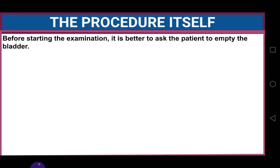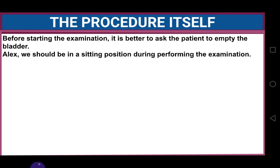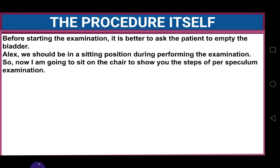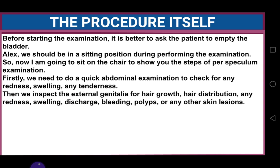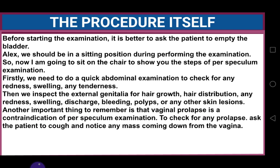Before starting the examination, ask the patient to empty the bladder. You should be in a sitting position during the examination. First, do a quick abdominal examination to check for redness, swelling, and tenderness. Then inspect the external genitalia for hair distribution, redness, swelling, discharge, bleeding, polyps, or any skin lesions. An important thing to remember: vaginal prolapse is a contraindication for per speculum examination. To check for any prolapse, ask the patient to cough and notice any mass coming down from the vagina.